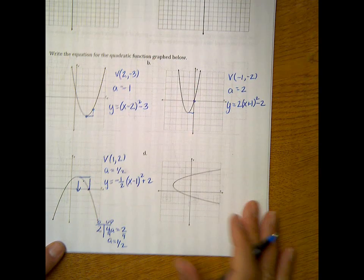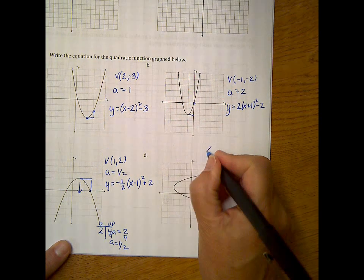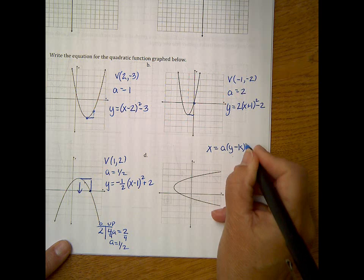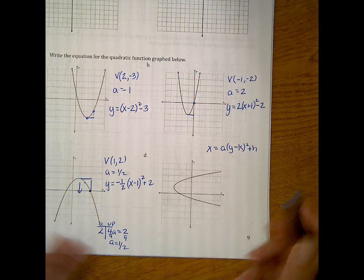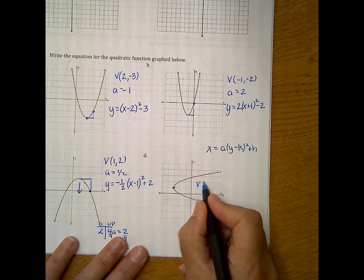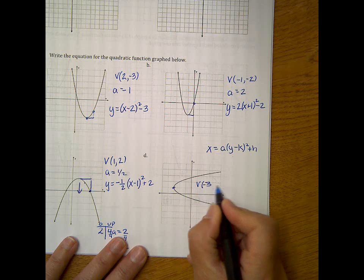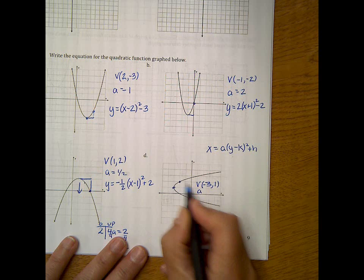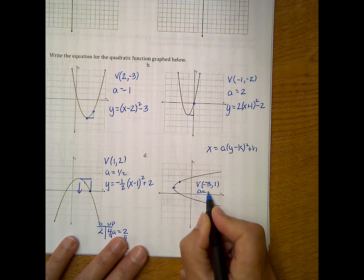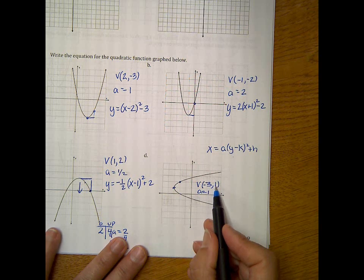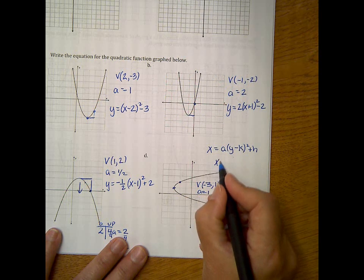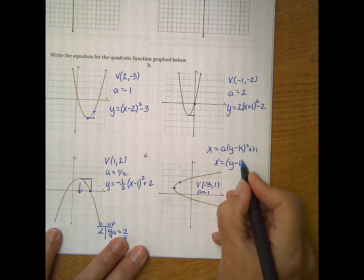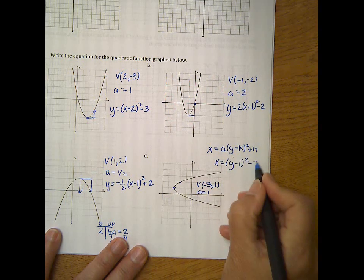Okay, now this one's sideways. So it's going to be in the form x equals a times y minus k squared plus h. So find my vertex. My vertex appears to be 3, 1. My a value looks to be up 1 over 1. So remember, the y value of the vertex goes with y. So x equals, my a value is just 1, so y minus 1 squared minus 3 would be that equation.